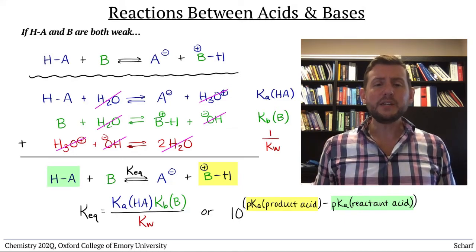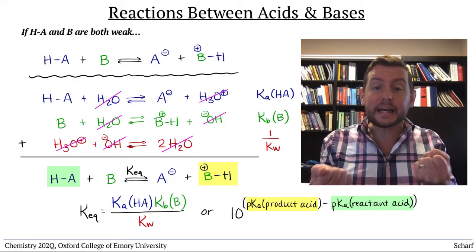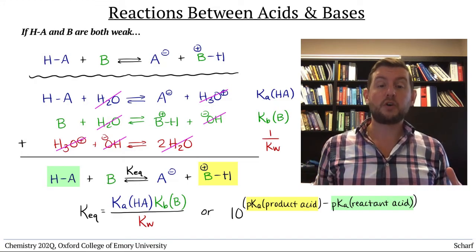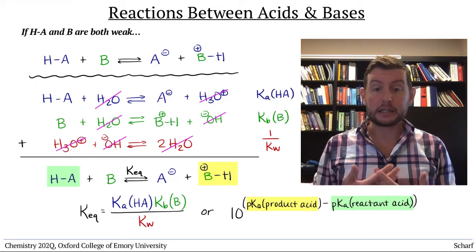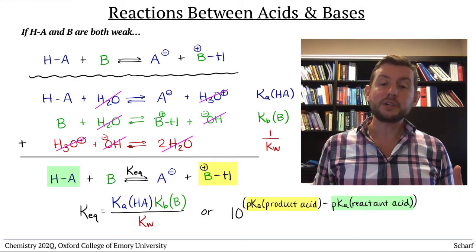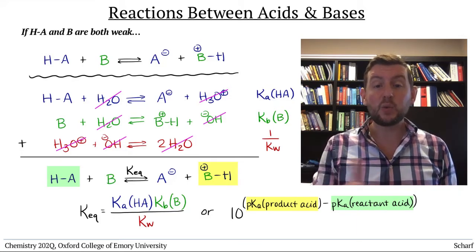So how do we interpret these equations? What do they mean? The more obvious interpretation is that the stronger the acid and the base that react, the larger the equilibrium constant. Another interpretation is that an acid-base equilibrium favors the side with the weaker acid and base.